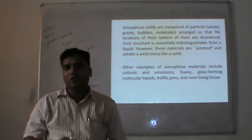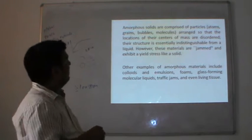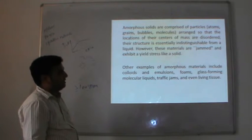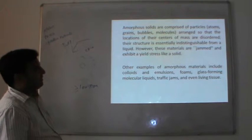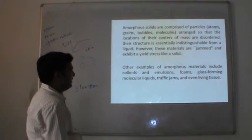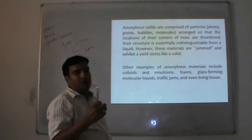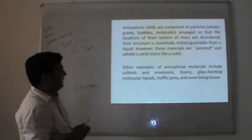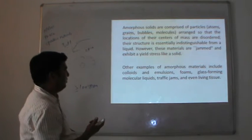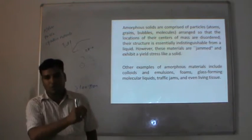Colloids and emulsions are other examples. Amorphous solids are comprised of particles, atoms, grains, bubbles, and molecules arranged so that the locations of their centers of mass are disordered — the structure is essentially indistinguishable from a liquid. However, these materials are rigid and exhibit properties just like a solid. Other examples of amorphous materials include foams, glass-forming molecular liquids, and even living tissues are among the best examples of amorphous solids.